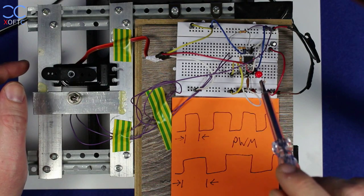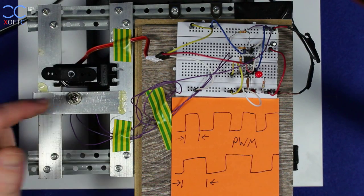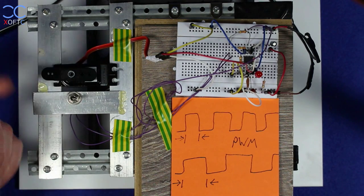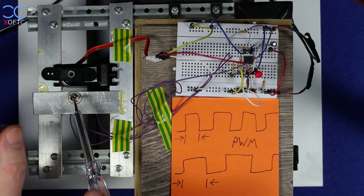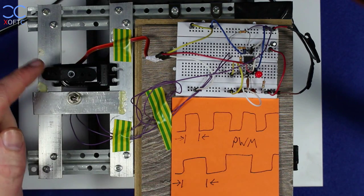That causes the servo motor to go to this position. Lower the switch, and this is a position where the servo motor will always be. Pretty fun to build.